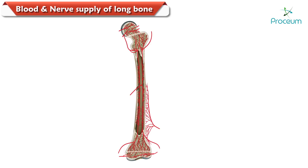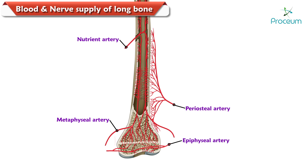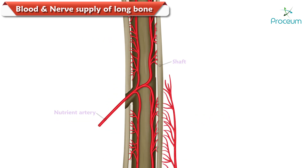The long bone is supplied by four sets of arteries: number one, the nutrient artery; number two, the periosteal arteries; number three, metaphyseal arteries; and number four, the epiphyseal arteries. Let's take a look at the nutrient artery.